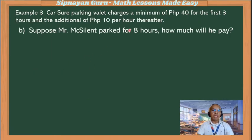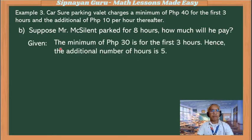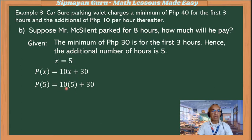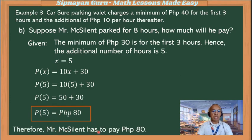Suppose Mr. McSilent parked for 8 hours, how much will he pay? The minimum fee of 30 pesos is for the first 3 hours. So if Mr. McSilent parked for 8 hours, the additional hours is 5, so x = 5. Our function is P(x) = 10x + 30. P(5) = 10 times 5 plus 30, which is 50 plus 30 = 80. Therefore, Mr. McSilent has to pay 80 pesos if he parked for 8 hours.